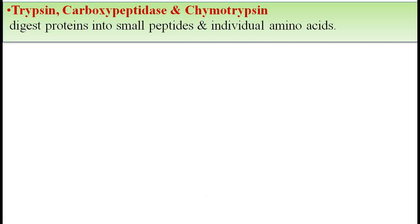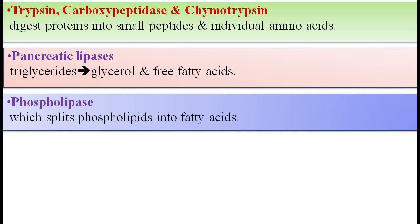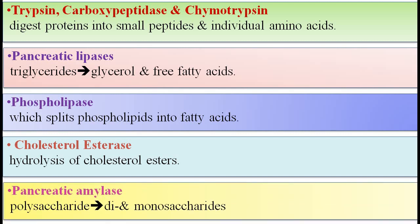The pancreatic acini secrete digestive enzymes including trypsin, carboxypeptidase, and chymotrypsin, which digest proteins into small peptides and amino acids. Pancreatic lipases digest triglycerides into fatty acids and glycerols. Phospholipase splits phospholipids into fatty acids. Cholesterol esterase hydrolyzes cholesterol esters. Pancreatic amylase breaks down polysaccharides into monosaccharides and disaccharides.